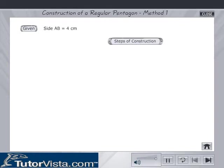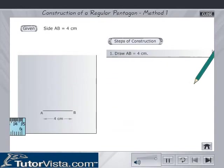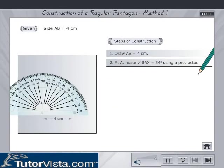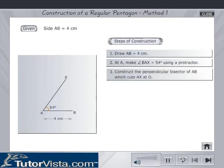The steps of construction are as follows. Draw AB is equal to 4 cm. At A, make angle BAX is equal to 54 degrees using a protractor. Construct the perpendicular bisector of AB, which cuts AX at O.